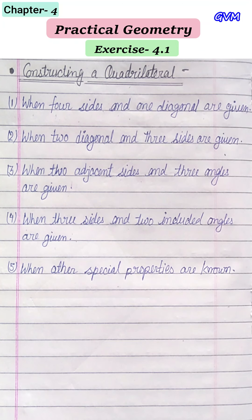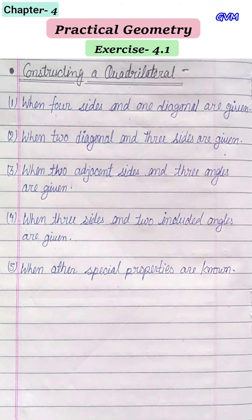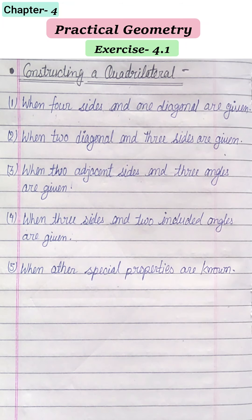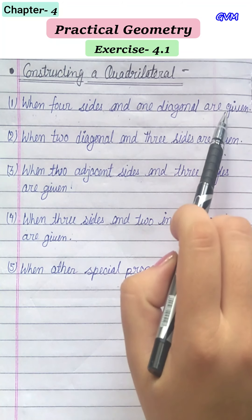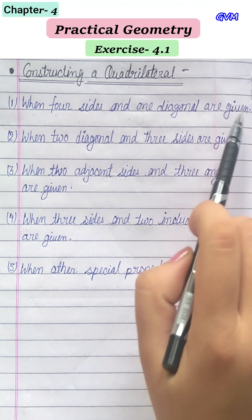In the previous class you learned how to construct triangles. Now we will be constructing quadrilaterals. In this chapter we have five different cases for constructing quadrilaterals in different ways. The first case is when four sides and one diagonal are given.